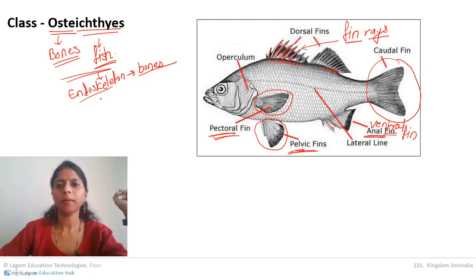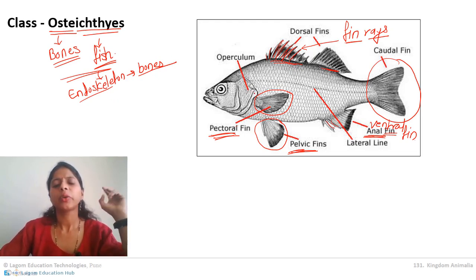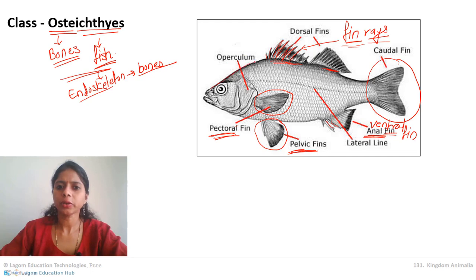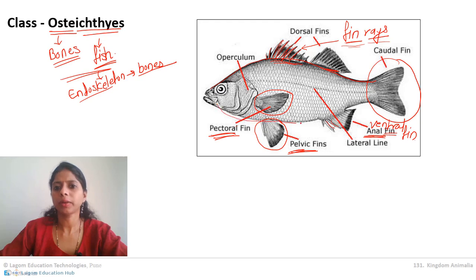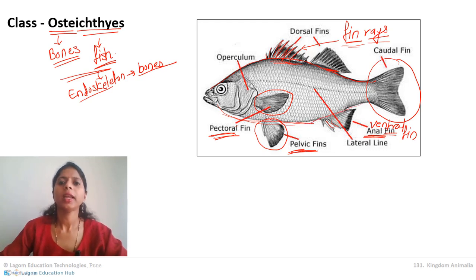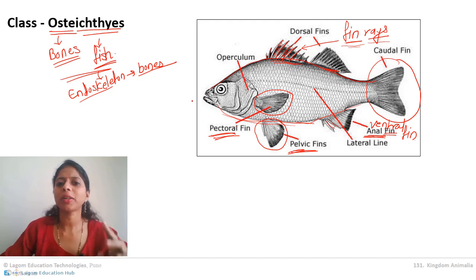The second characteristic is about the fins — different types of fins and fin rays. The third characteristic is about the shape of the fish. The body is always streamlined or boat-shaped, tapering at both ends and broader in the middle. This shape helps the fish swim properly and minimizes resistance while swimming.